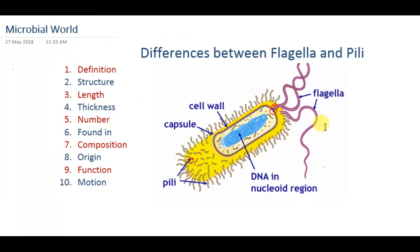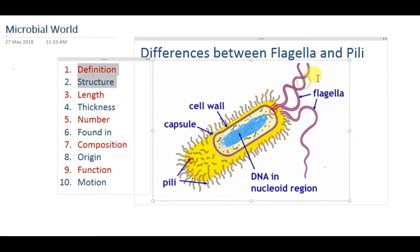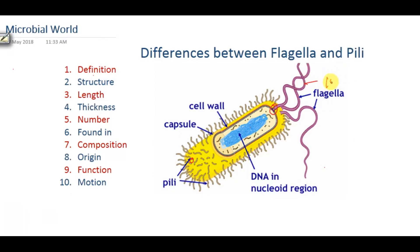What about the thickness of flagella and pili? Flagella is thicker than pili. The thickness of flagella is 15 to 20 nanometers in diameter. On the other hand, the thickness of pili is 3 to 10 nanometers in diameter, so pili is thinner than flagella.